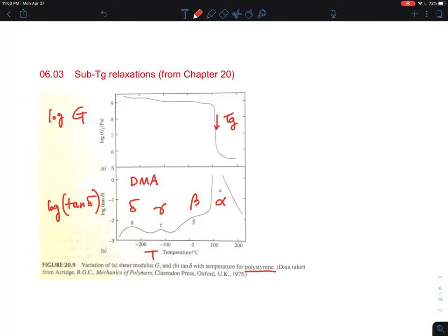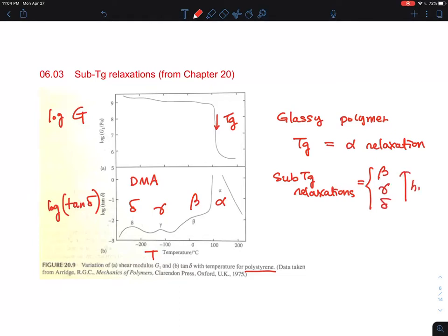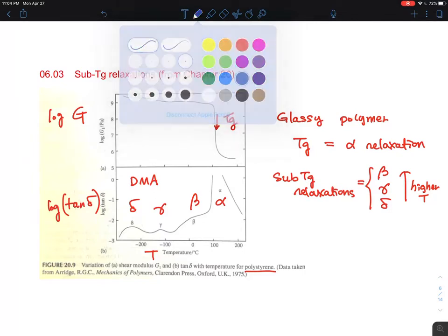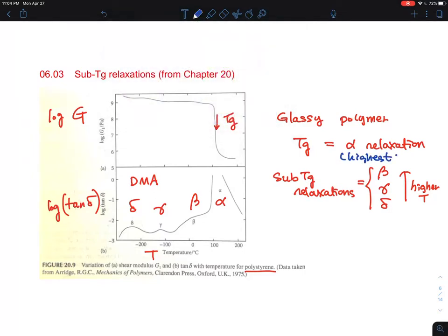What people name these is essentially based on whatever is the biggest, highest temperature, which you normally call alpha. For the glassy polymer, Tg, the glass transition temperature, is the alpha relaxation. Then the sub-Tg relaxations are beta, gamma, delta, in sequence with higher temperature. Alpha is the highest temperature for the relaxation.